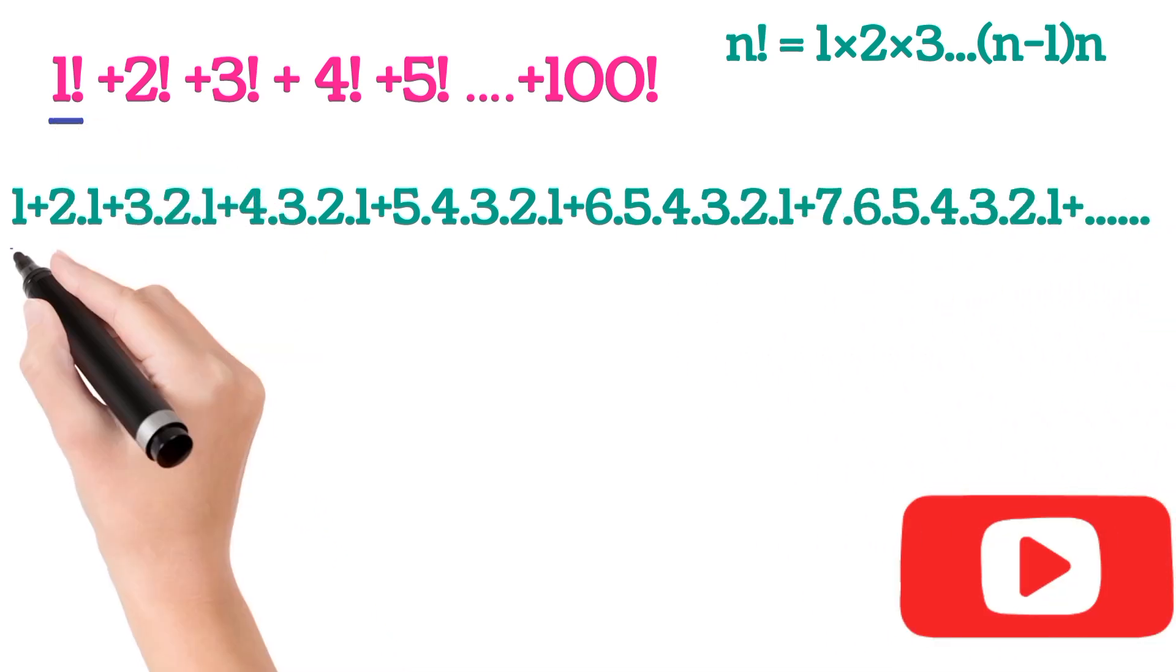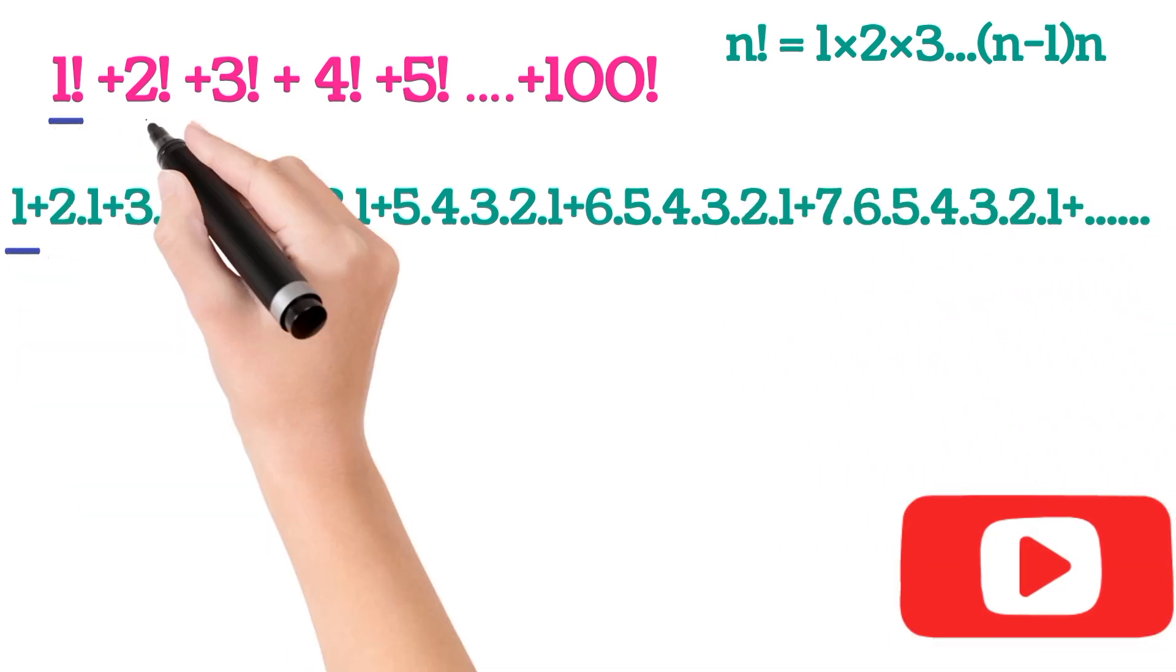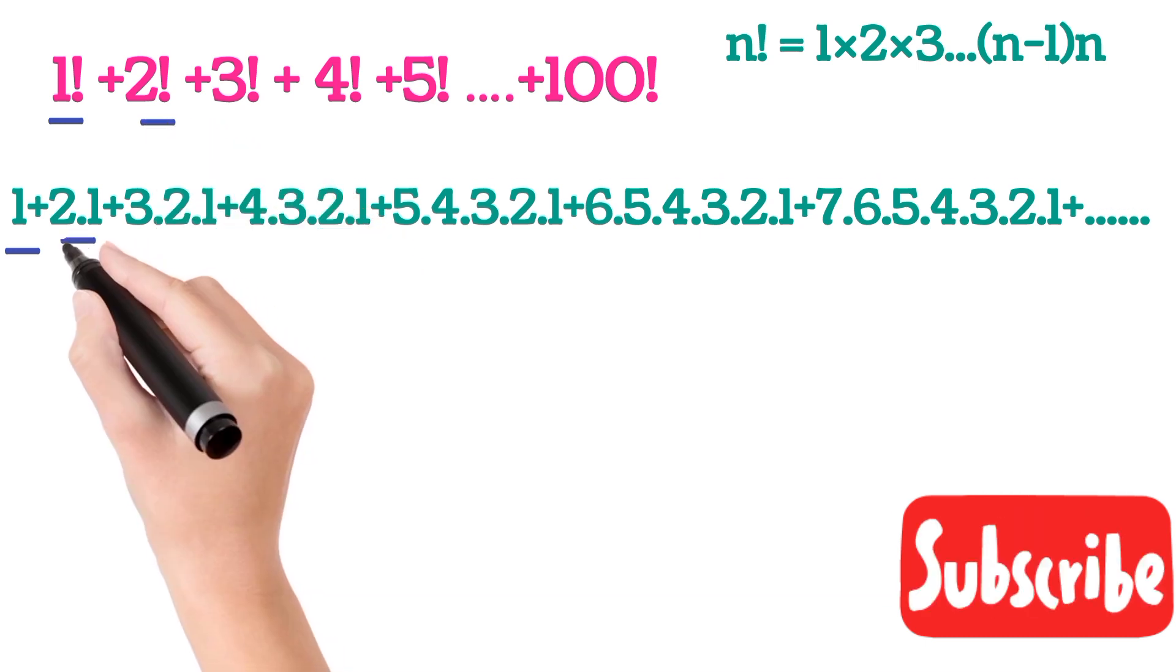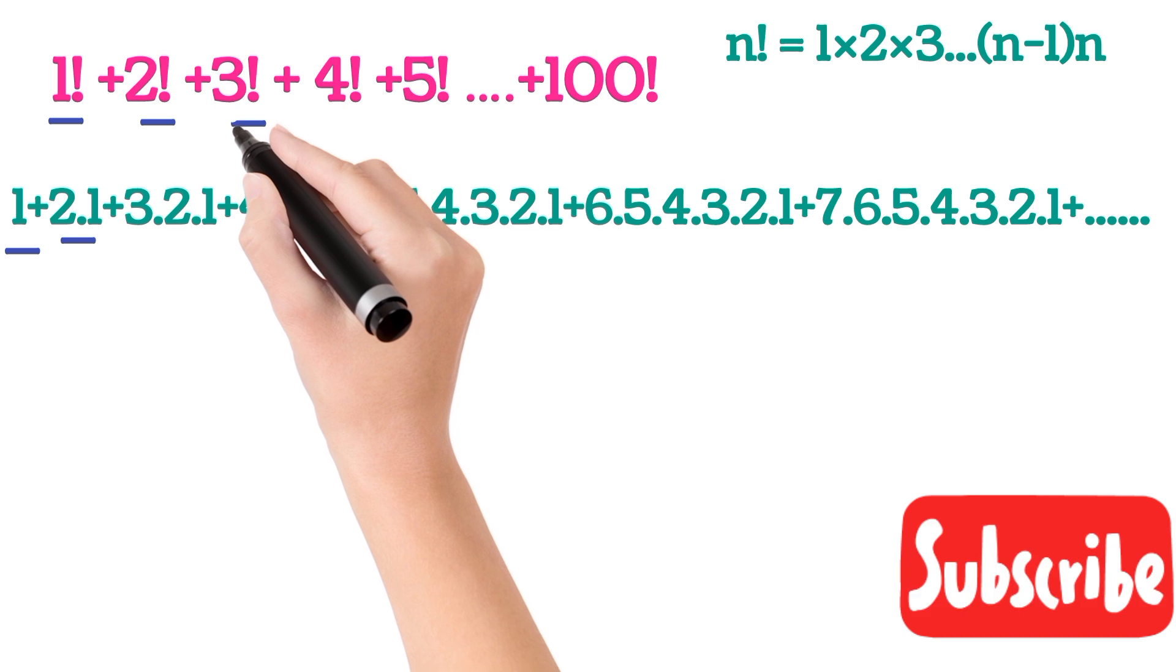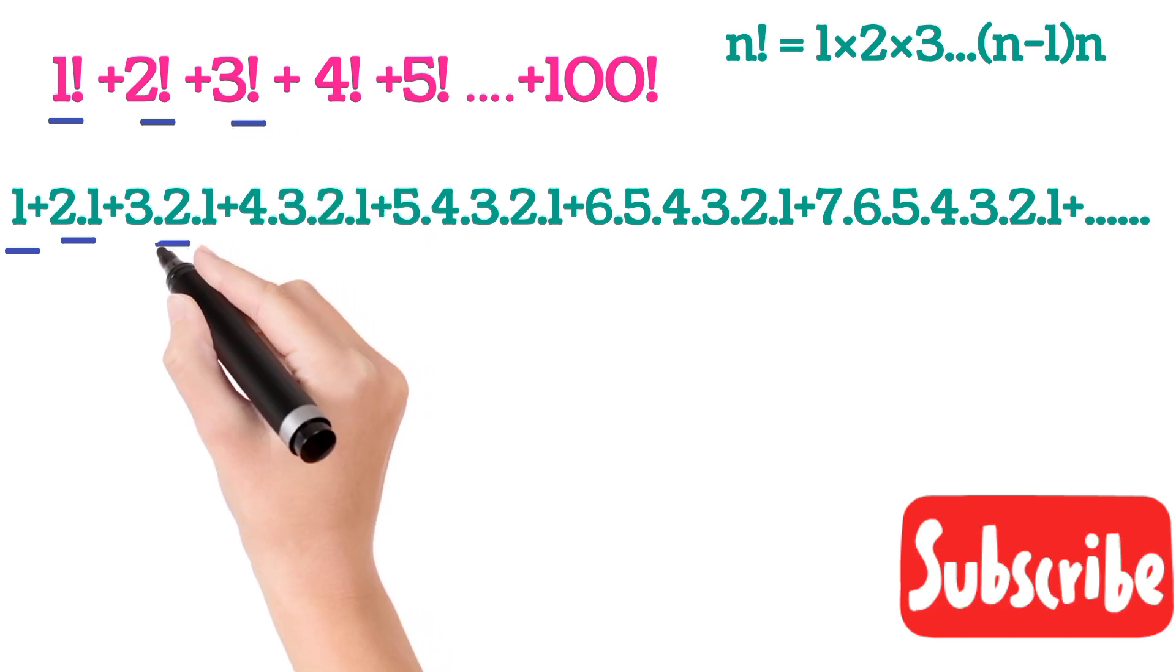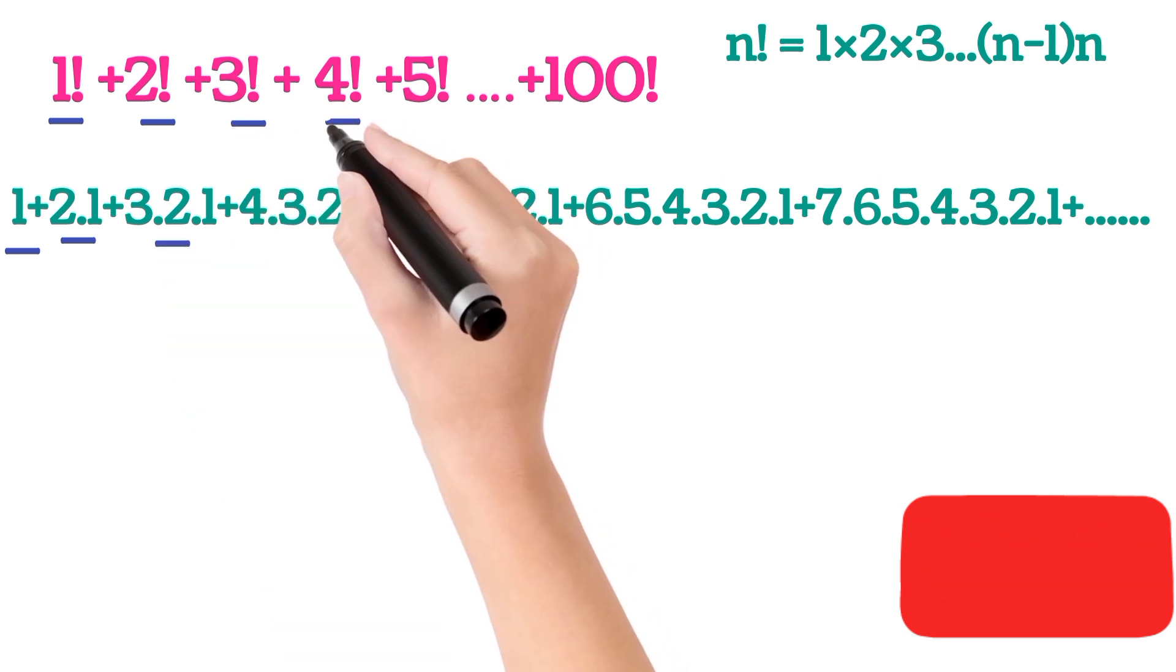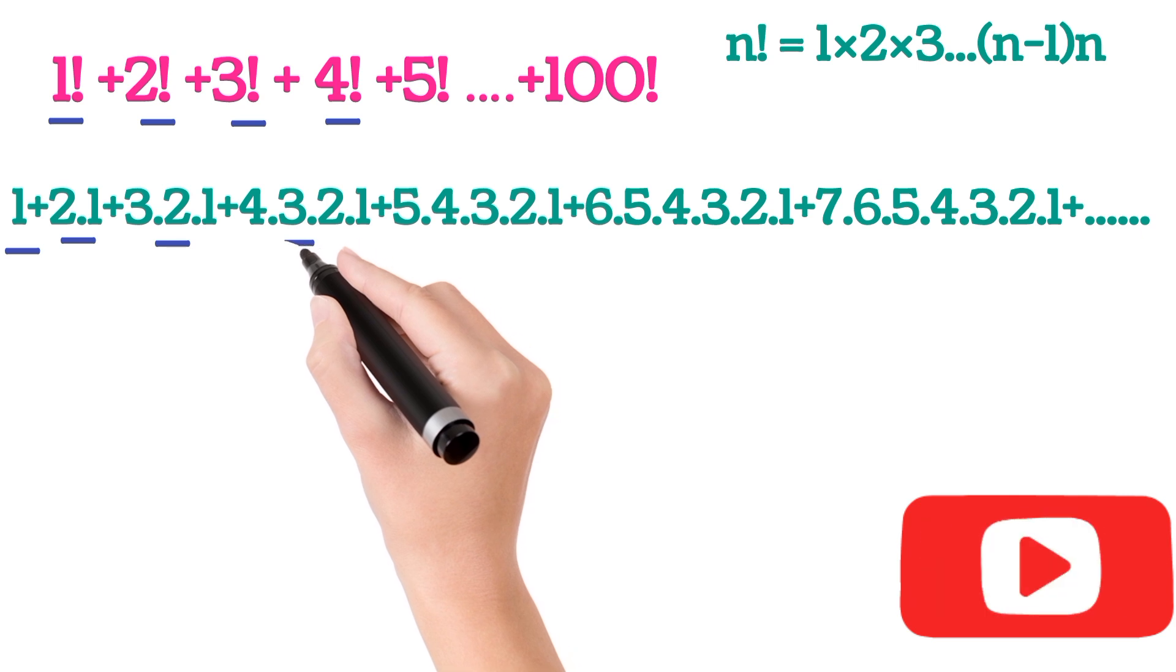1 factorial can be written as 1. 2 factorial can be written as 2 into 1. 3 factorial can be written as 3 into 2 into 1. 4 factorial is 4 into 3 into 2 into 1.